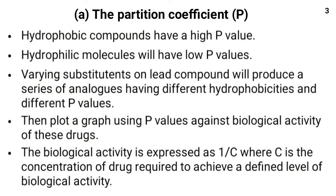Hydrophobic compounds have high P values, while hydrophilic molecules have low P values. By changing substituents on the lead compound, we get a series of analogs with different hydrophobicities and different P values. We then plot a graph of P values against biological activity, which is expressed as 1/C, where C is the concentration of the drug required to achieve a defined level of biological activity.